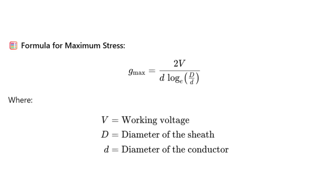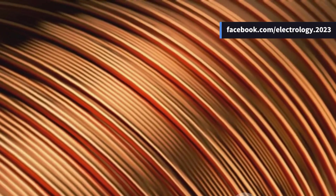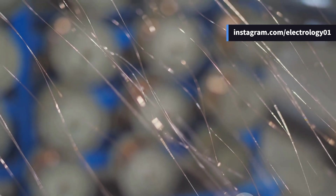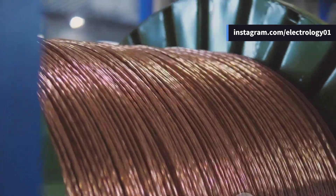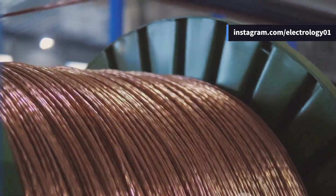Now, imagine this. For a given voltage and sheath diameter, we can still adjust the conductor diameter, small d. So the question is: what value of small d gives us the most economical design? Pause for a moment and think. If you make small d too large, you waste copper or aluminium. If small d is too small, the insulation stress skyrockets. So there must be a sweet spot — let's find it.